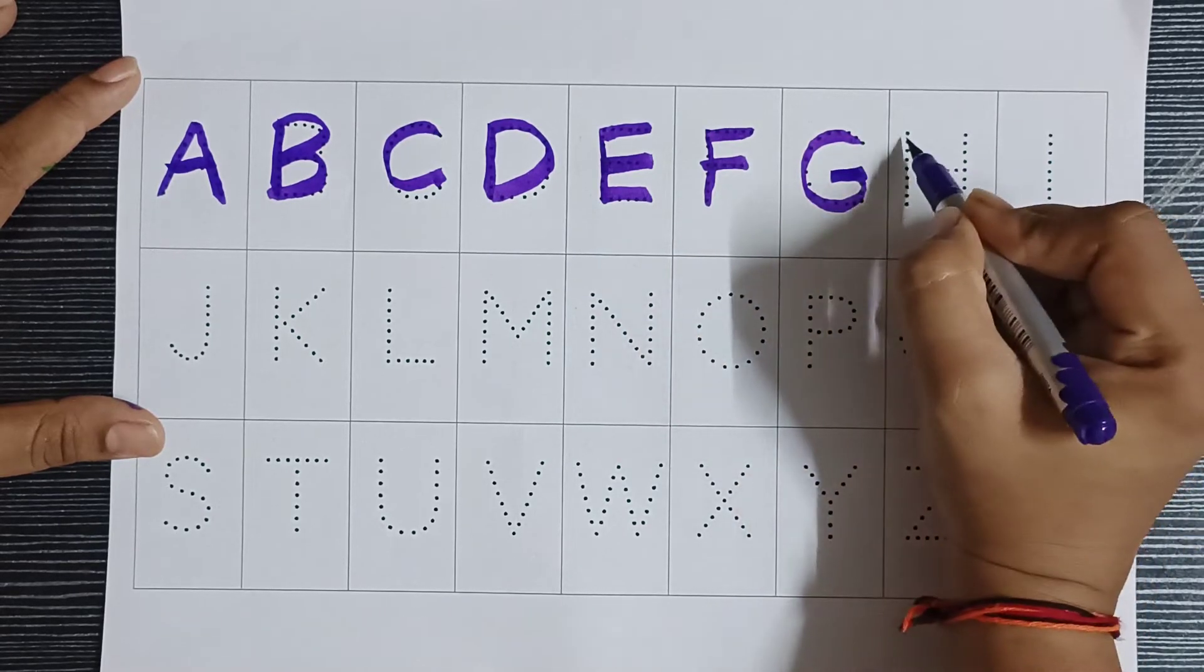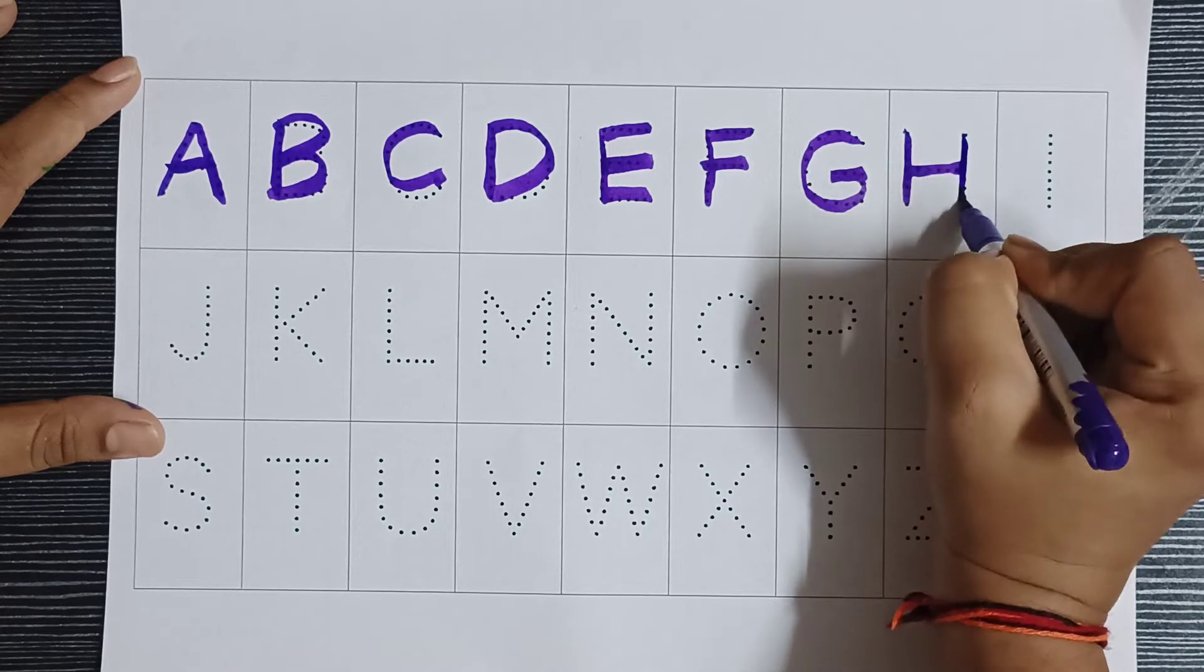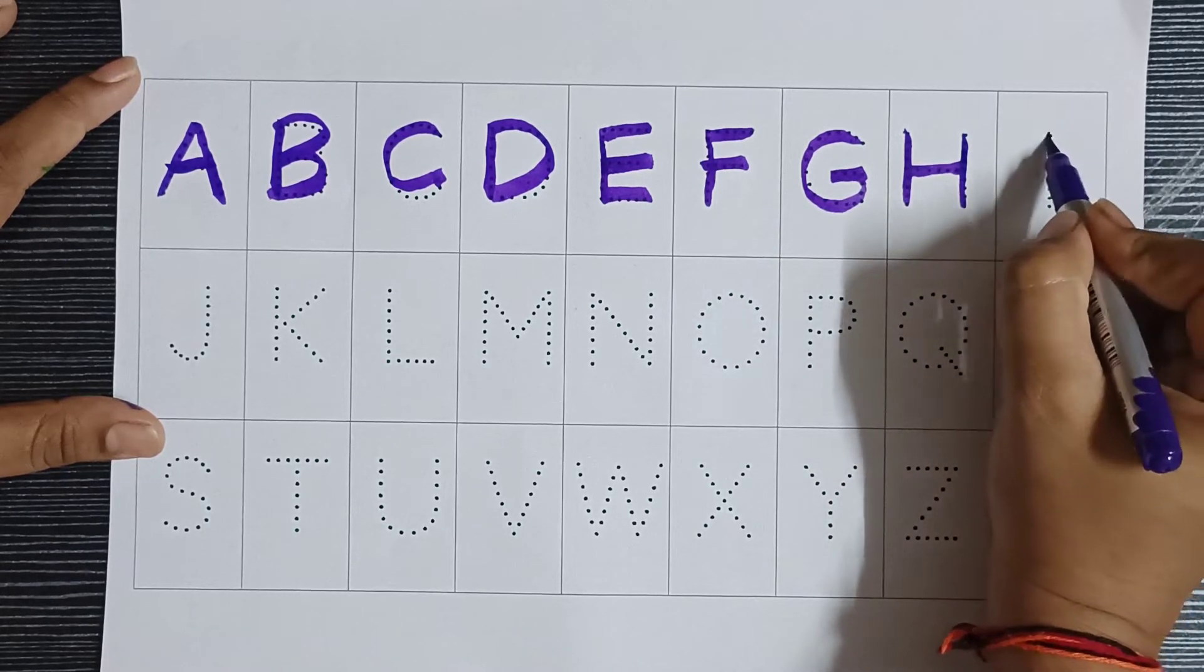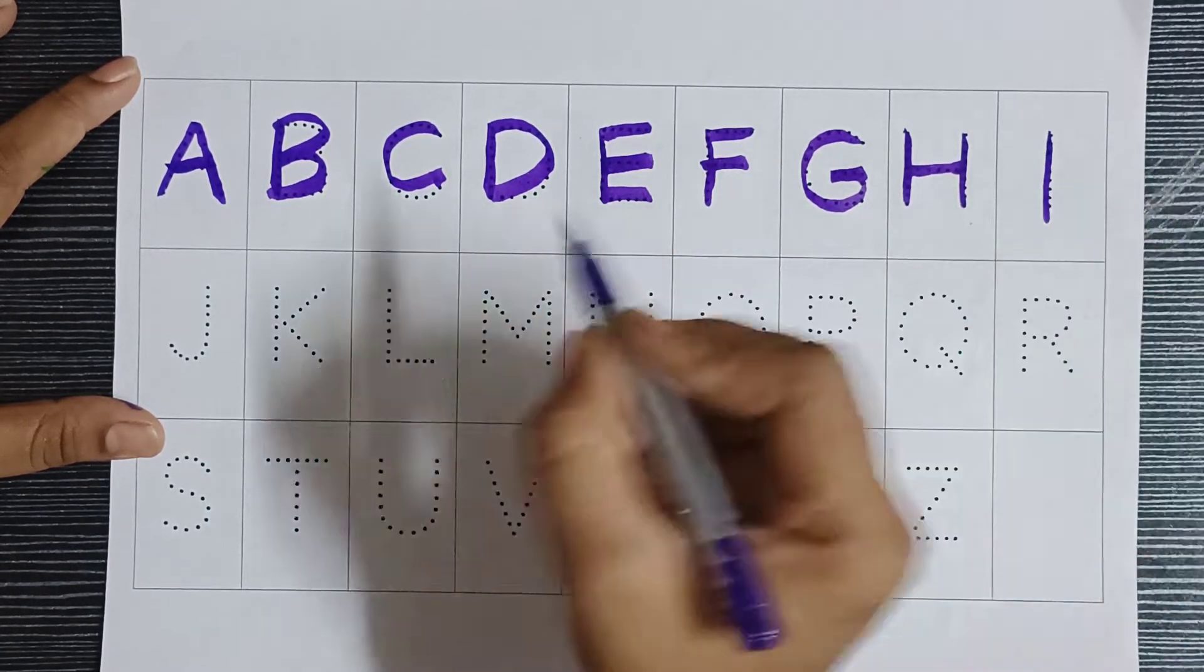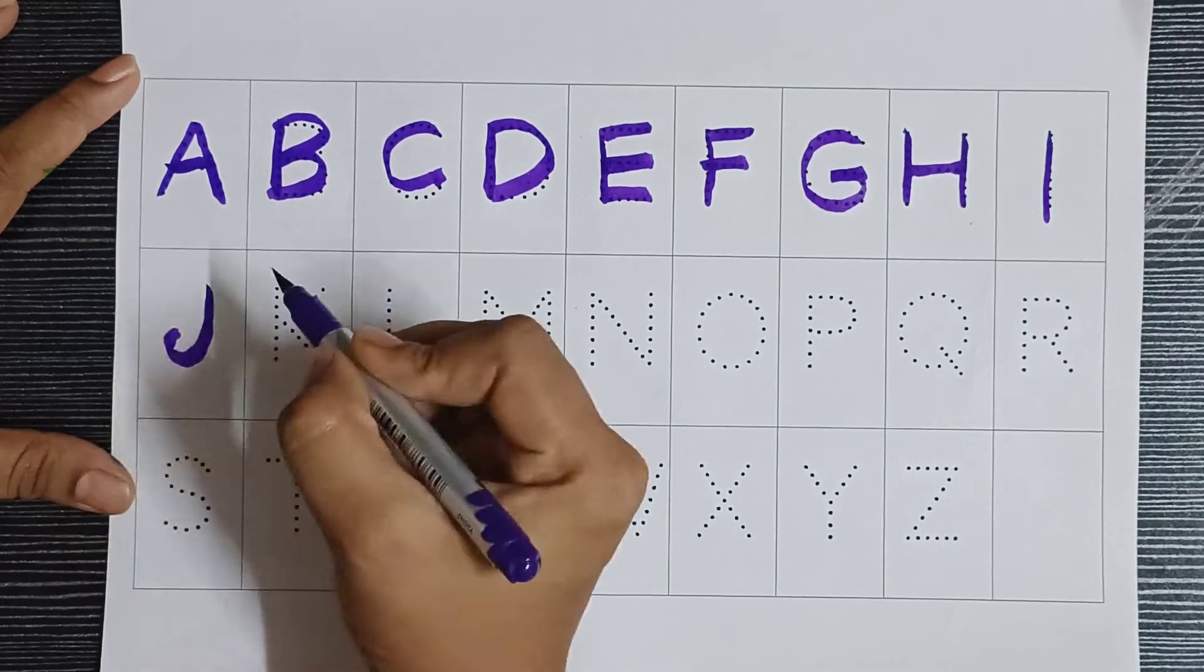G. G for goat. H. H for hen. I. I for ice cream.